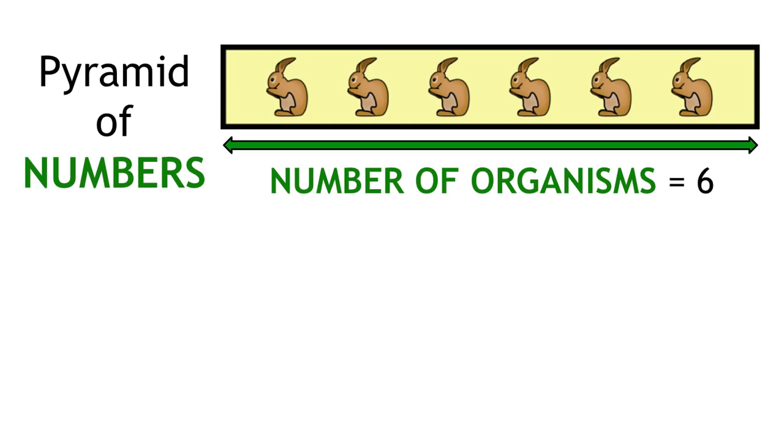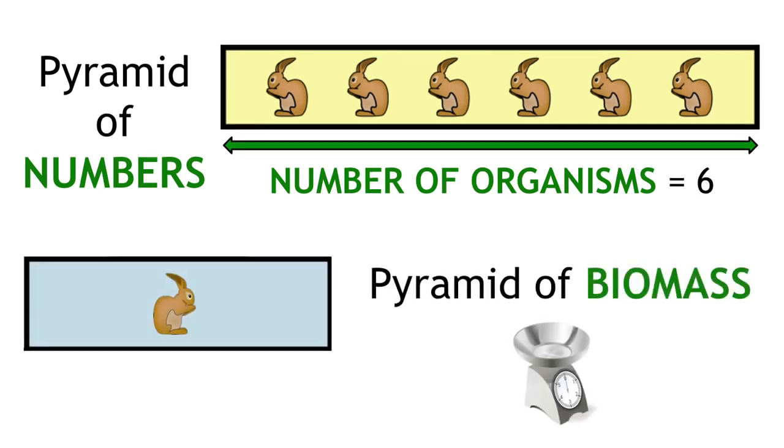In the pyramid of biomass, it shows the biomass of organisms, and the common unit for this is grams per metre squared.